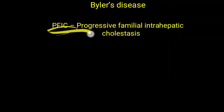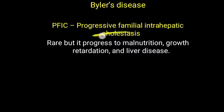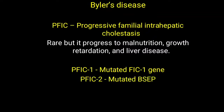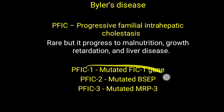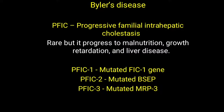PFIC stands for progressive familial intrahepatic cholestasis — another type of congenital hyperbilirubinemia with stagnation of bile inside the liver. It is rare but can progress to malnutrition, growth retardation, and liver disease. PFIC1 has a mutated FIC1 gene, PFIC2 has a defective bile salt excretory protein gene, and PFIC3 has a mutated multidrug resistance protein 3 gene. Unlike BRIC which is episodic and benign, PFIC is persistent and more dangerous.